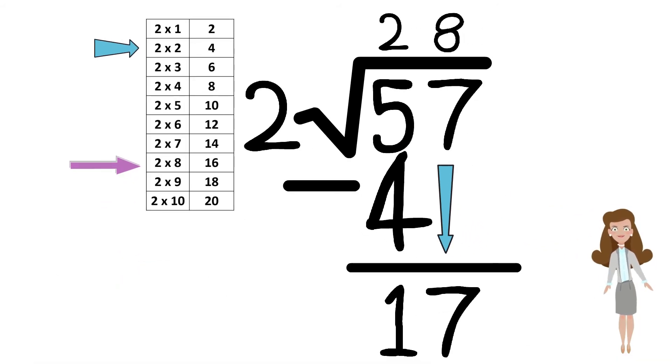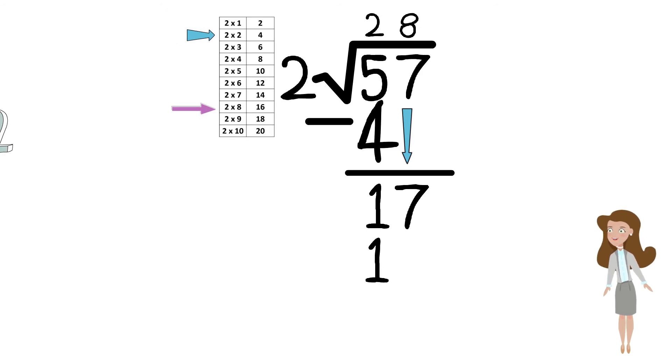2 multiplied by 8 gives us 16. Let's write 8 on top and the result of 16 below. Perform the subtraction and write the result of 1.